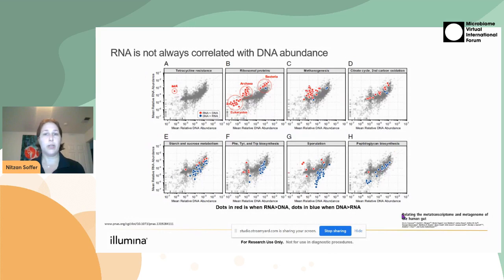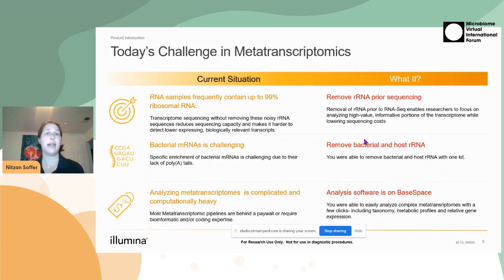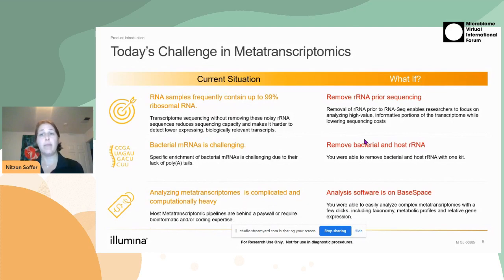So I just wanted to explain why we really want to look at RNA. There are many challenges in looking at the metatranscriptome. First of all, most RNA from bacteria is ribosomal RNA — up to 99% or even more. Just for reference, in humans and other mammals it's around 90%, so bacterial rRNA content is very high. But if you remove that rRNA prior to sequencing, you can really focus on the more informative transcriptomes.